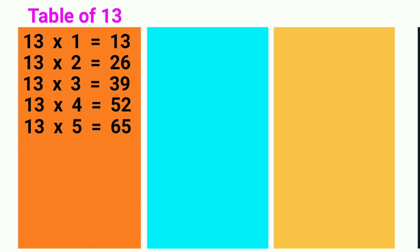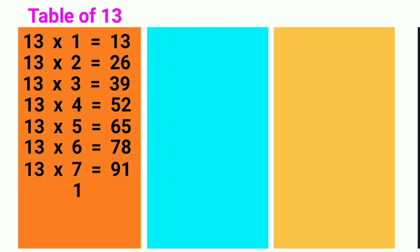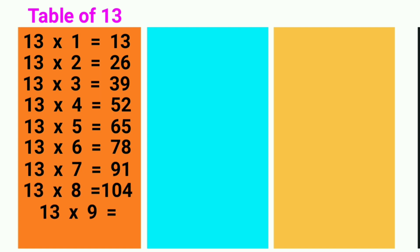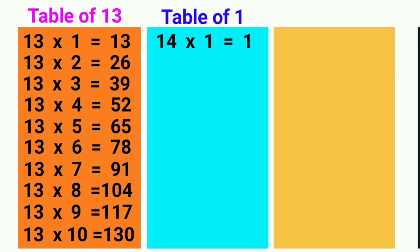13 fives are 65, 13 sixes are 78, 13 sevens are 91, 13 eights are 104, 13 nines are 117, 13 tens are 130.